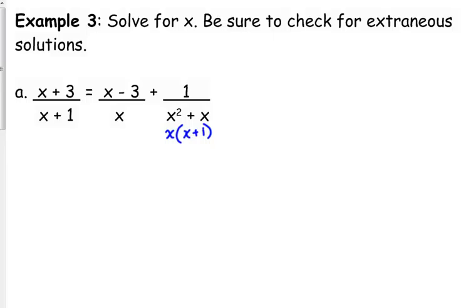Okay, so our LCD is just X times X plus 1, right? Because we've got X plus 1 in the first one, X in the second one, and we've got both pieces in the last one.